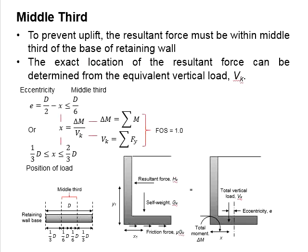To check for the middle third, we use the equations for eccentricity. The eccentricity of the loads needs to be less than d/6 for the middle third. It is a function of half the base minus the equivalent lever arm due to the vertical load.